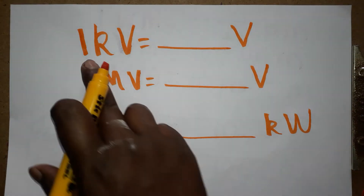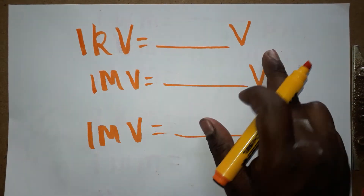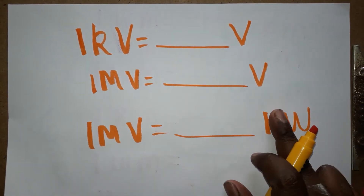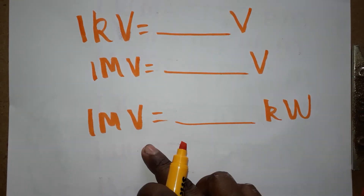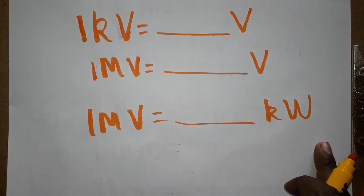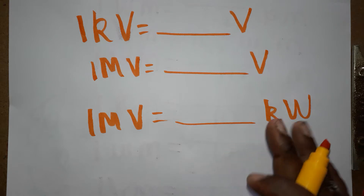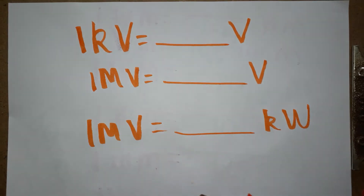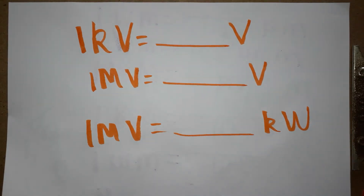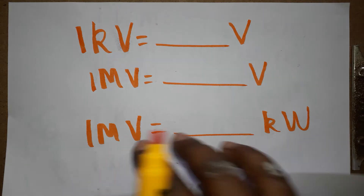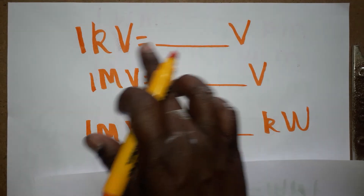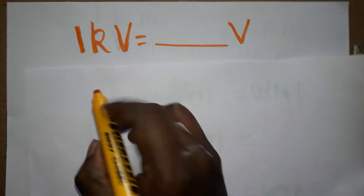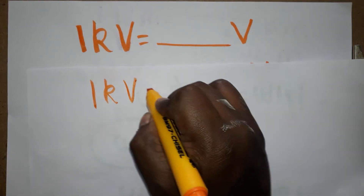Hello students, today we are going to learn: one kilovolt is equal to how many volts, one megavolt is equal to how many volts, and one megavolt is equal to how many kilovolts. Voltage is a unit of potential difference. In electricity, current is directly proportional to voltage.